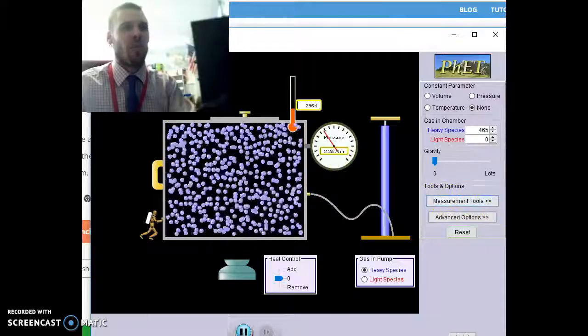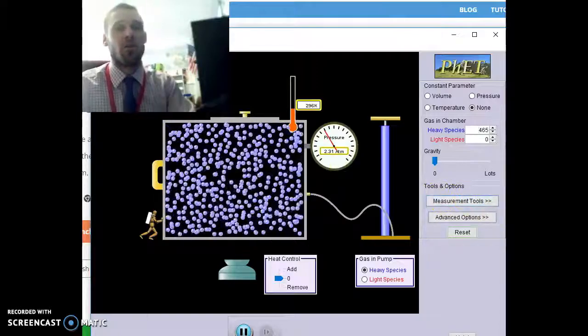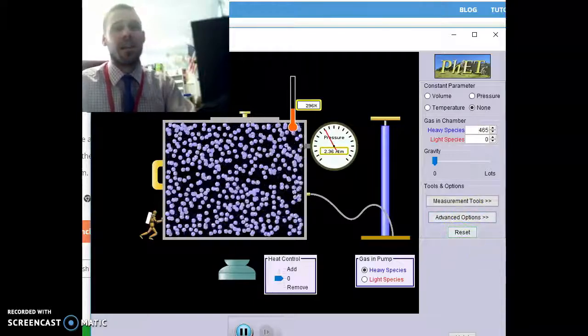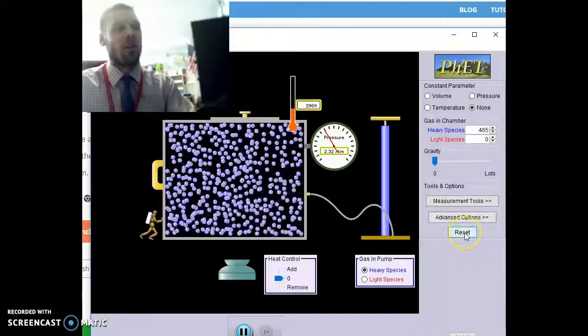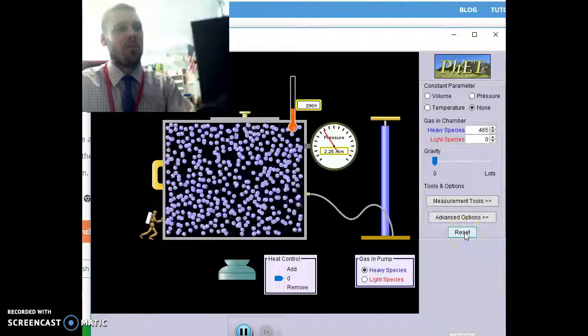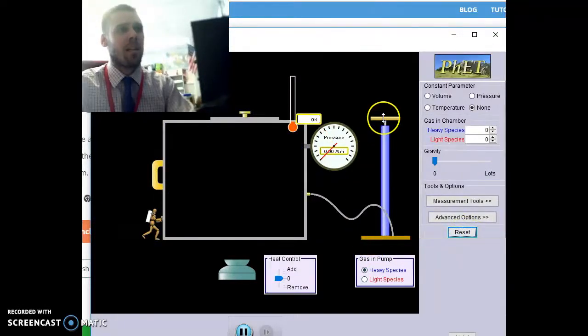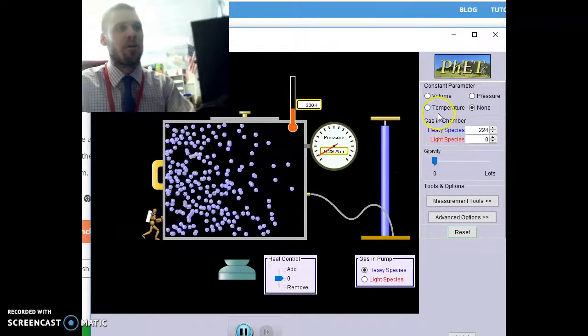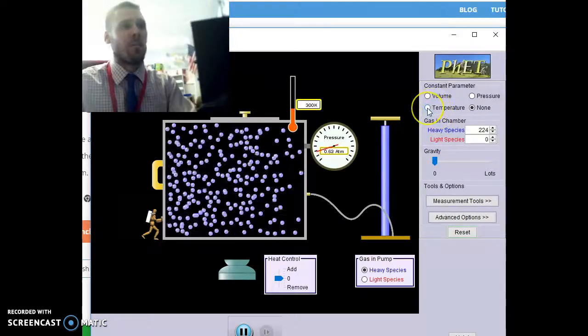So that's graph number one. Graph number two is going to represent Boyle's Law, which is the relationship between pressure and volume, while holding temperature constant. So I'm going to go ahead and hit the reset button on the right-hand side. Let's get some gas particles back in here. And again, for Boyle's Law to be true, you need to hold temperature constant.